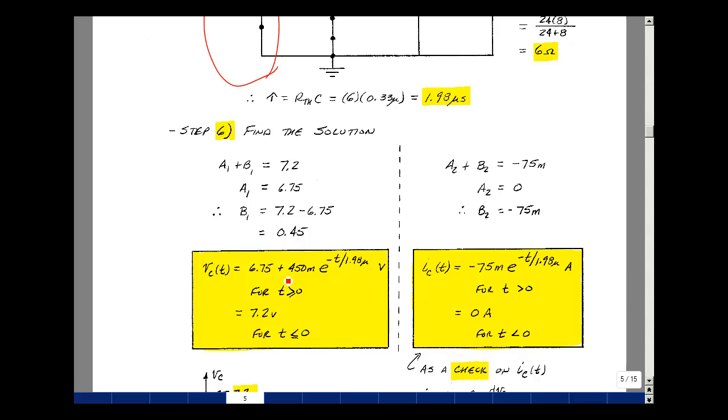So our capacitor voltage then is a1 plus b1 e to the minus t over tau, 6.75, and then 450 millivolts times e to the minus t over 1.98 microseconds, and the units here would be volts. This is true for t greater than zero, but also through zero since this is the capacitor voltage, and it can't jump instantaneously.